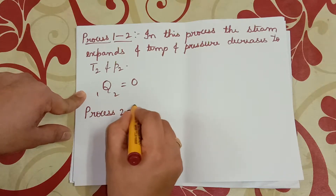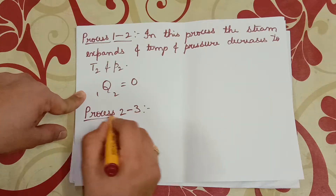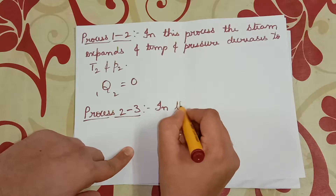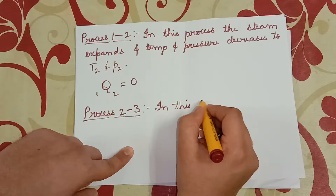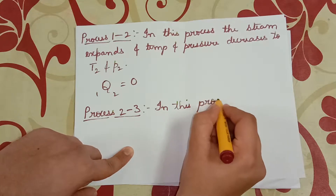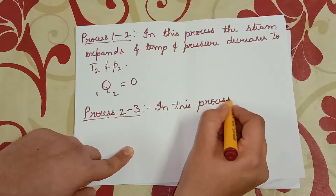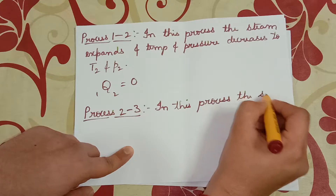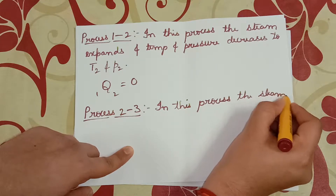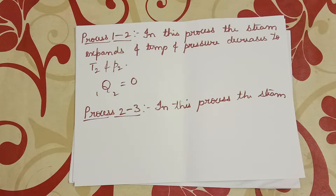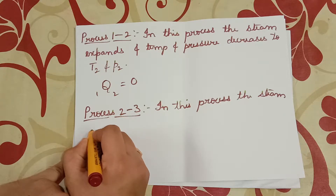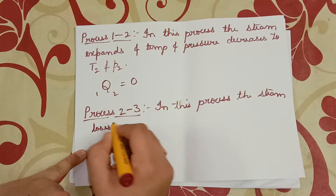Process 2 to 3. In this process, heat is rejected from the steam at constant temperature and pressure. Q23 is equal to T2 into (S2 minus S3).